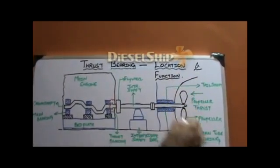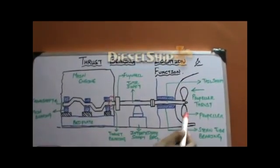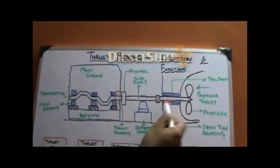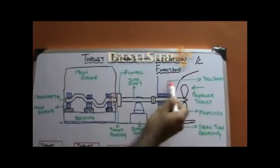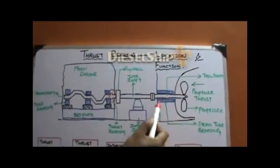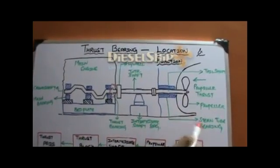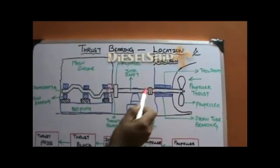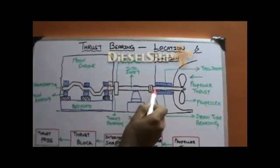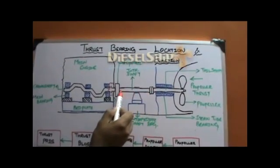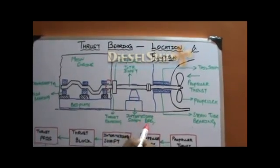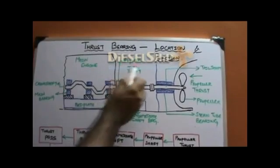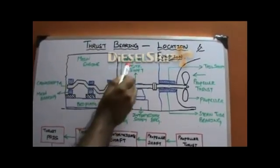Let us assume this to be the aft portion of the ship. We have the propeller here, and the propeller shaft or tail shaft comes inside the ship through the stern tube bearings. The propeller or tail shaft is marked here, and the blue shaded portion shows the stern tube bearings which support the propeller shaft. Here is the connection between the tail shaft and the intermediate shaft, connected via a flange. The intermediate shaft runs over here, supported by the intermediate shaft bearing, and is connected to the flywheel of the main engine.